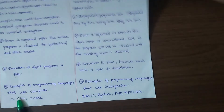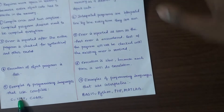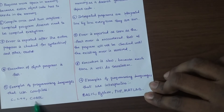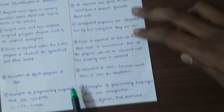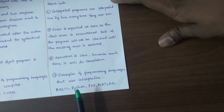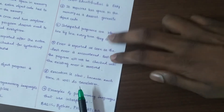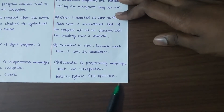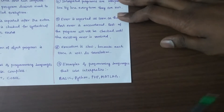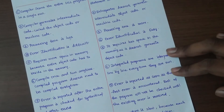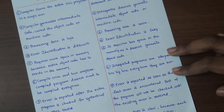Examples of programming languages that use compilers are C++, C, and COBOL. Examples of programming languages that use interpreters are BASIC, Python, PHP, and MATLAB. These are the important differences between compiler and interpreter.